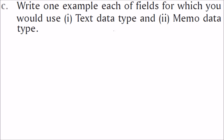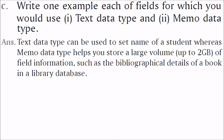Write one example each for text data type and memo data type. Text data type can be used to store the name of a student, whereas memo data type helps you store a large volume — up to 2 GB — of field information, such as the bibliographical details of a book in a library database.